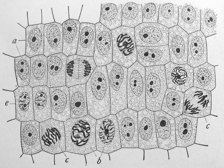Organelles are parts of the cell adapted and/or specialized for carrying out one or more vital functions, analogous to the organs of the human body such as the heart, lung, and kidney. Both eukaryotic and prokaryotic cells have organelles, but prokaryotic organelles are generally simpler and are not membrane-bound. Some organelles, such as the nucleus and Golgi apparatus, are typically solitary, while others, such as mitochondria, chloroplasts, peroxisomes, and lysosomes, can be numerous. The cytosol is the gelatinous fluid that fills the cell and surrounds the organelles.